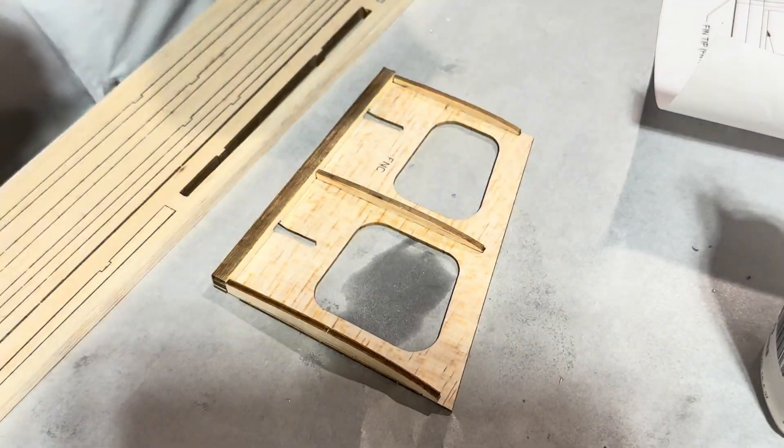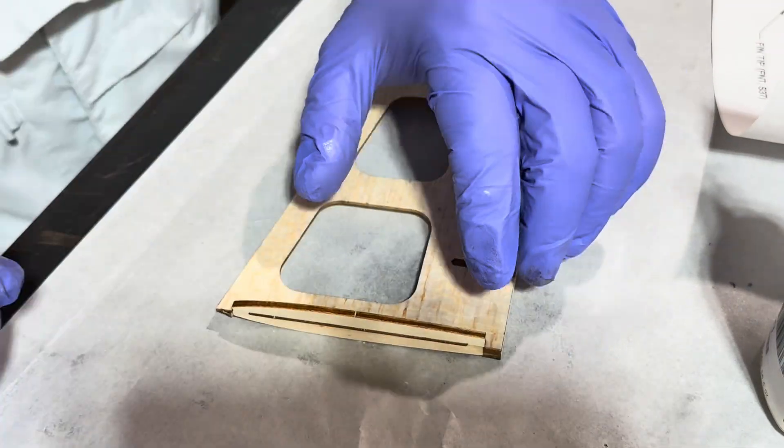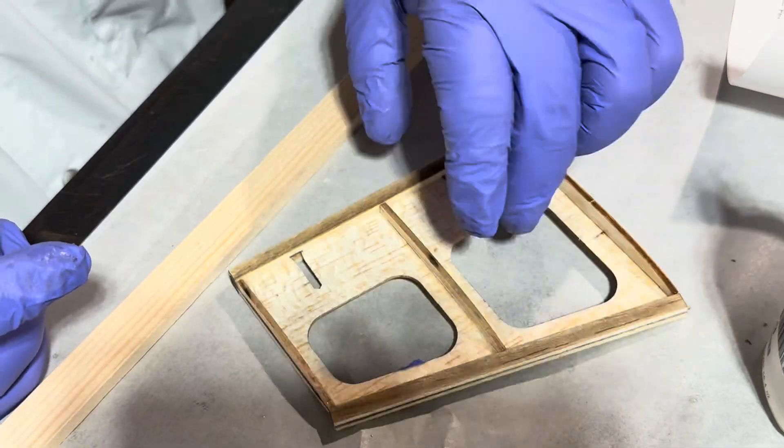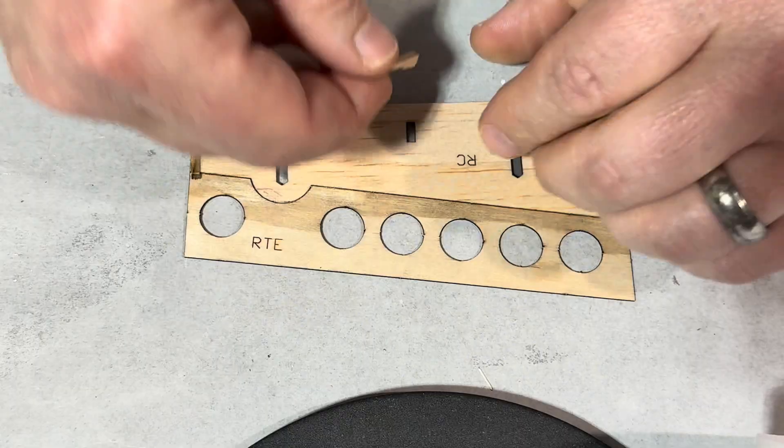So the vertical stabilizer and the rudder are assembled in the same exact fashion. You can see we're just adding the ribs, the leading edge, the trailing edge. And like I said, you don't even need the plans for it. It goes together that quickly.